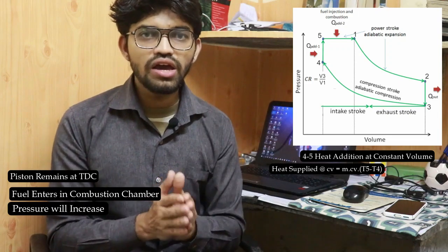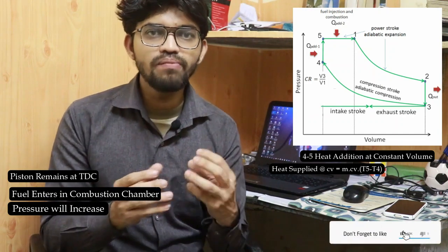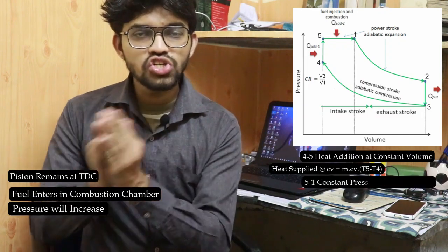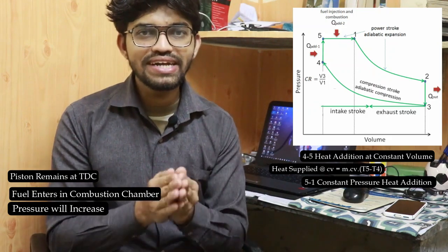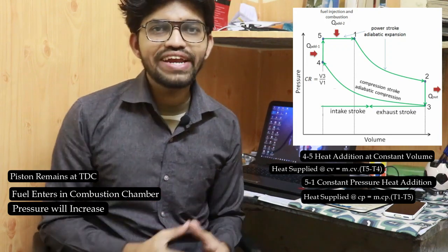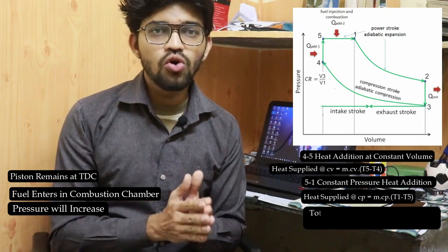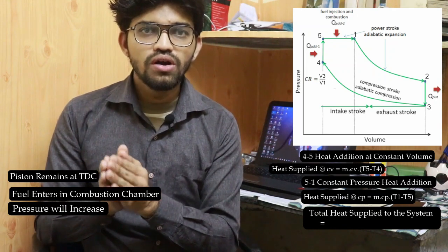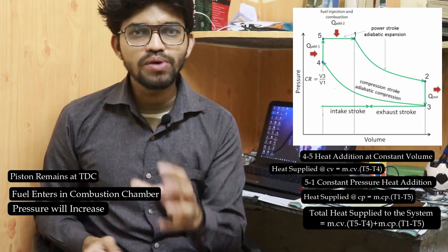After ignition, the pressure inside the engine cylinder starts building up. Process 5 to 1 is the constant pressure heat addition process. The total heat added during this constant pressure process is calculated as: Q_5-1 = m × Cp × (T1 − T5). The total heat supplied into the system is the sum of both heat addition processes: Q_total = m × Cv × (T5 − T4) + m × Cp × (T1 − T5).